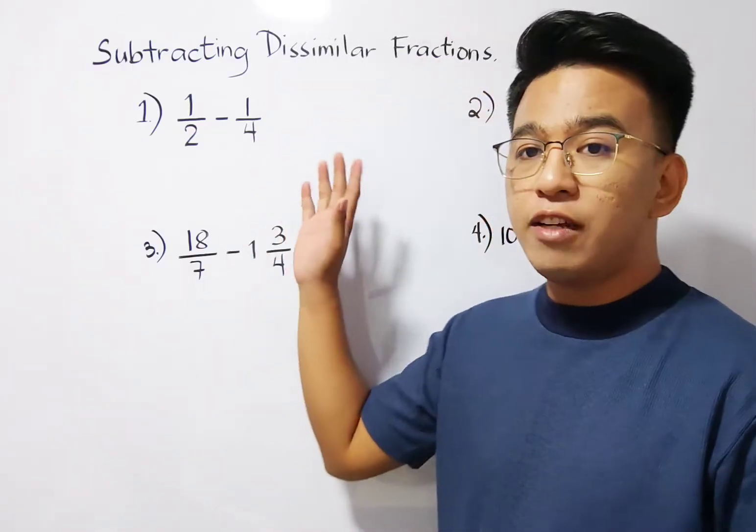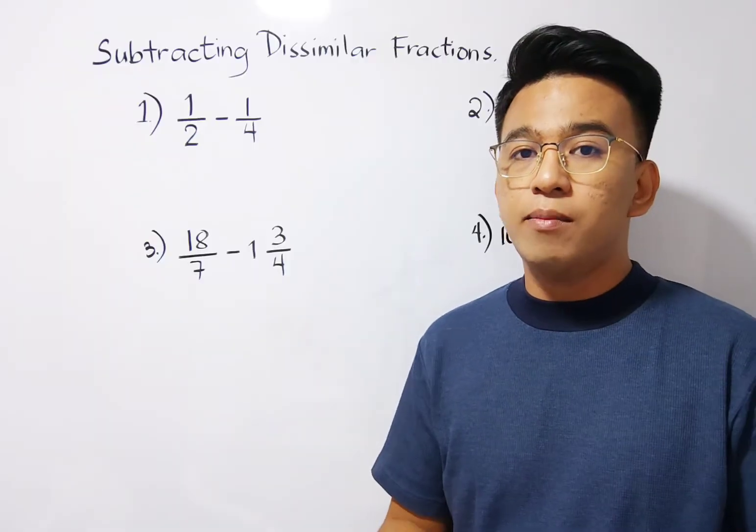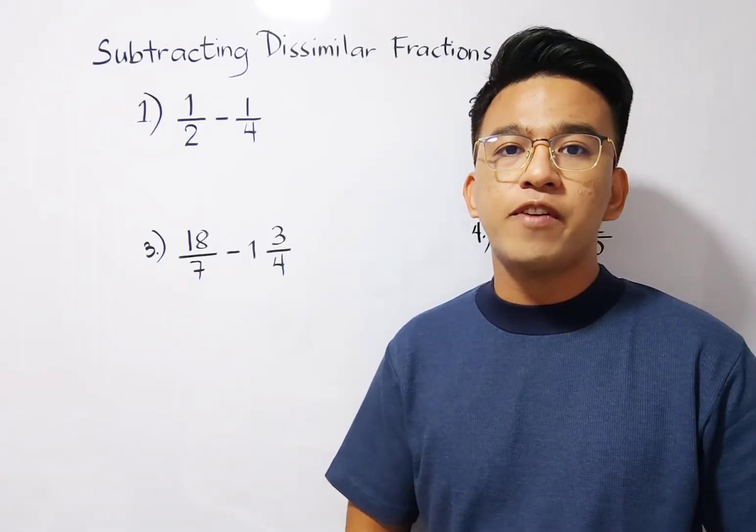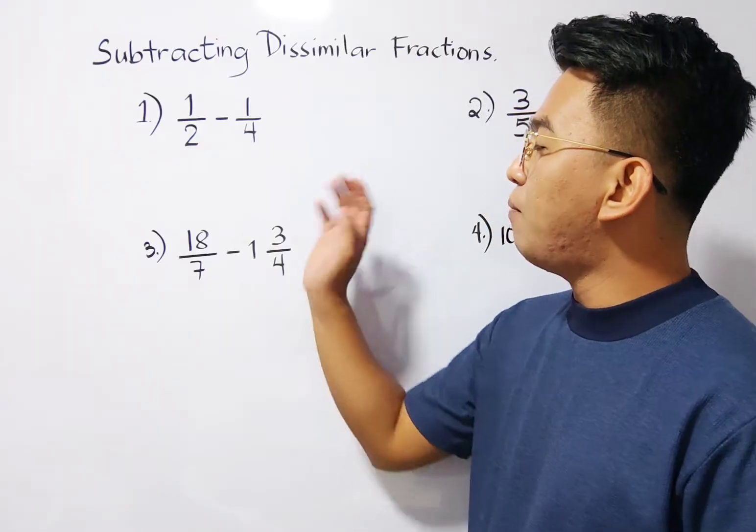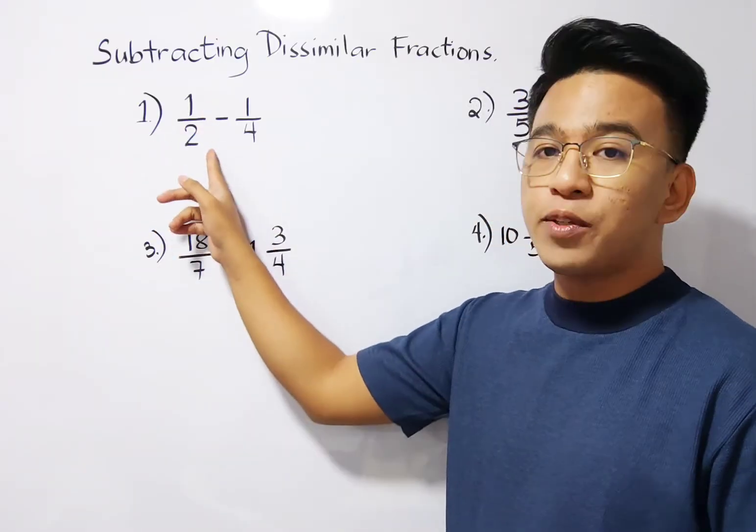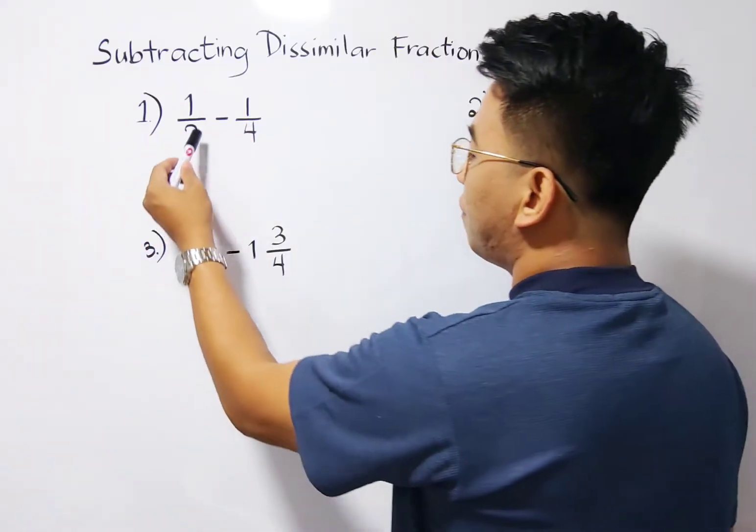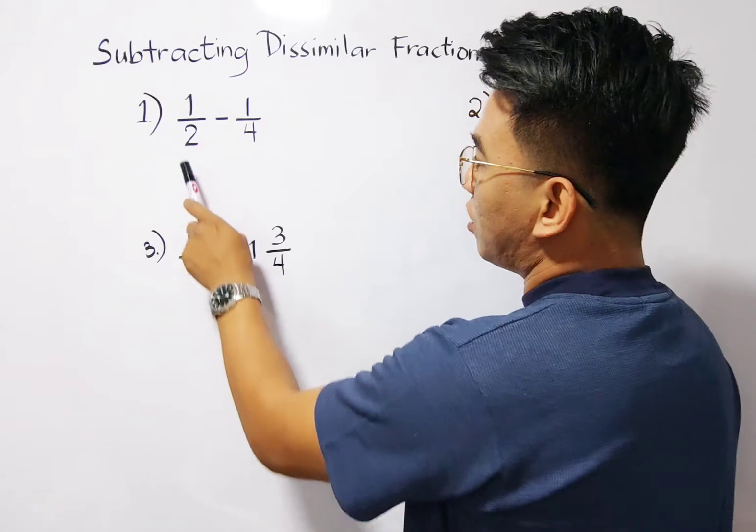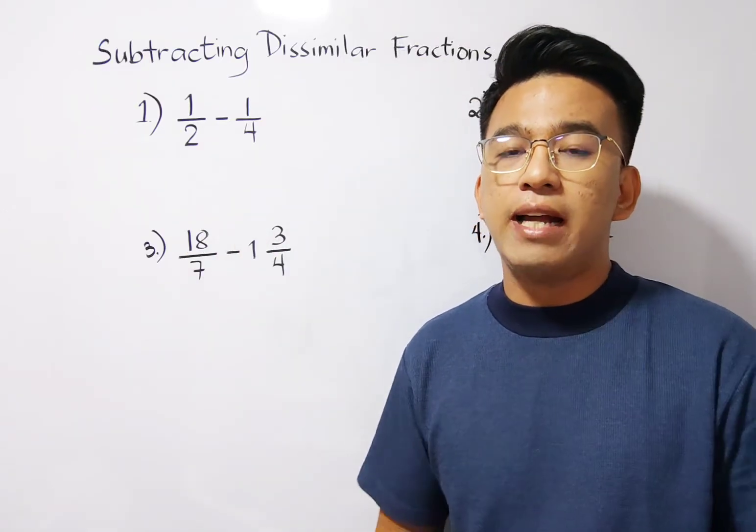So we have here four different examples wherein we are asked to subtract dissimilar fractions. When you say dissimilar fractions, these are fractions with different denominators. So example number one, we have 1 over 2 minus 1 over 4. As you can see, we have two different denominators, which is 2 and 4. So the question here, how are we going to subtract this kind of fractions?